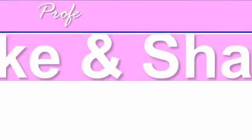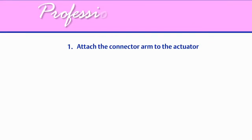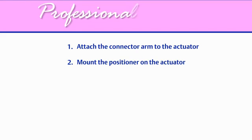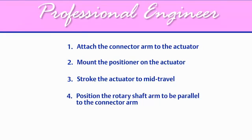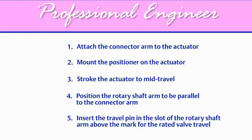So the Fisher 3582 positioner is mounted in just five easy steps. First, attach the connector arm to the actuator. Second, mount the positioner onto the actuator. Third, stroke the actuator to mid-travel. Fourth, position the rotary shaft arm to be parallel to the connector arm. And finally, insert the travel pin in the slot of the rotary shaft arm above the mark for the rated valve travel.